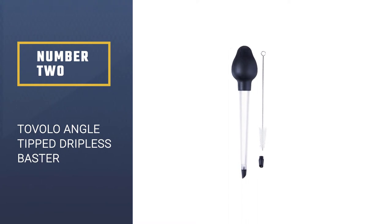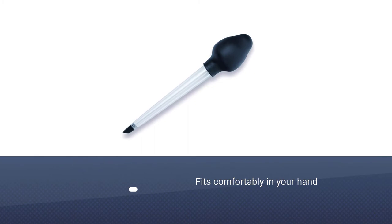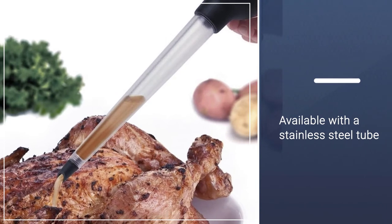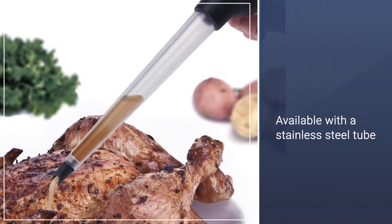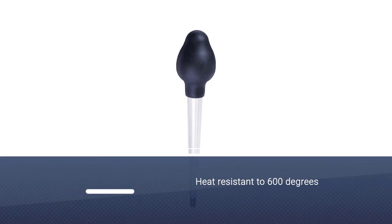The baster's tube is clear so you can see how much liquid you have, and it fits comfortably in your hand so you can baste often or use the baster to remove liquid from a pot or pan. A similar model is also available with a stainless steel tube that will never break. This is heat resistant to 600 degrees.